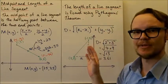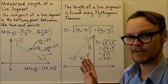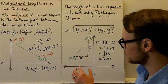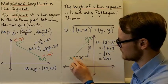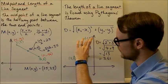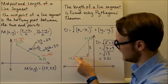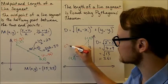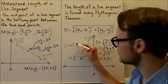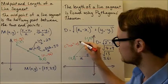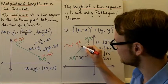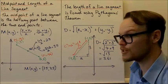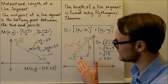We can find the length of a line segment using Pythagoras' theorem. Looking at our line segment, we can see that with the run and the rise, we can form a right-angle triangle. Pythagoras' theorem is c² = a² + b². So if I want to find the length d from one end to the other, that's going to be the hypotenuse of the right-angle triangle.